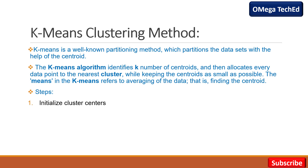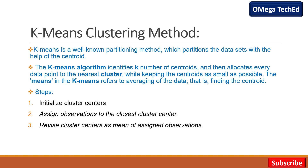In K-means algorithm we follow these steps. First step: initialize cluster centers — that is the k-value, we initialize the number of clusters. Second step: assign observations to the closest cluster center — we assign data points to the closest cluster center. Third step: revise cluster centers as mean of assigned observations — we revise the cluster center according to the mean. Fourth step: repeat steps two and three until convergence. Let's understand how this process works.